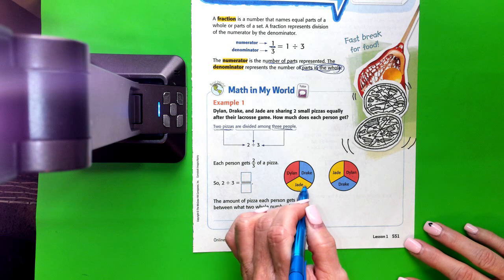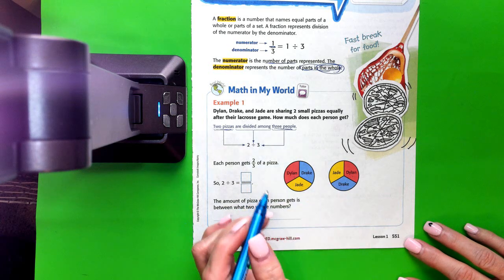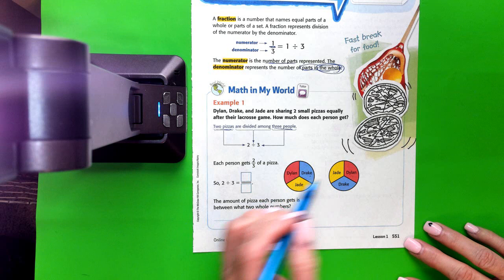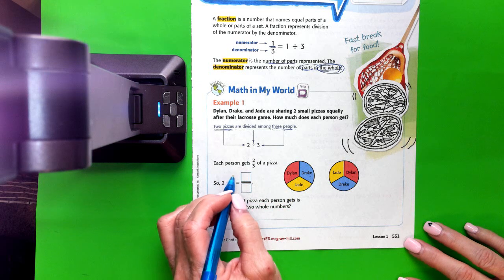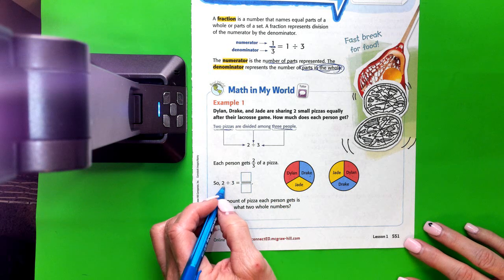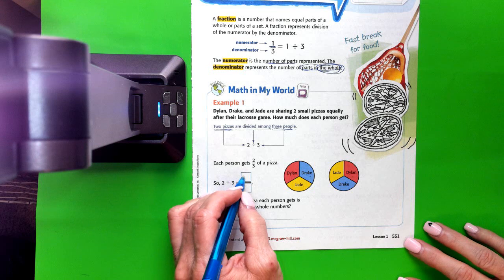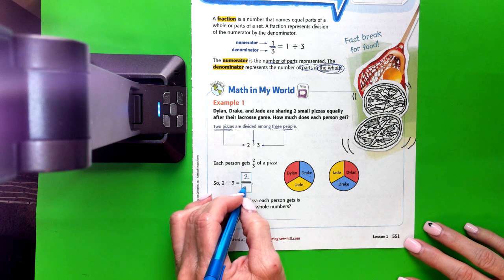Dylan was red, Jade is yellow, and Drake was blue. So each person got 2 out of the 3 pieces. 2 divided by 3 is equal to 2 thirds.